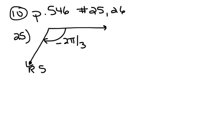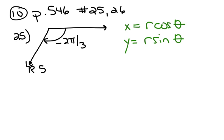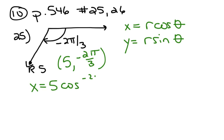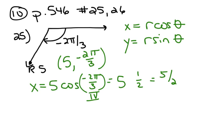In number 10, page 546, numbers 25 and 26, we want to turn polar coordinates back into rectangular coordinates. The formula is x equals r cosine theta, and y equals r sine theta. For number 25, r is 5 and theta is negative 2pi/3. x equals 5 cosine(−2pi/3). Since −2pi/3 is in quadrant 4 — wait, actually quadrant 3 — but cosine gives positive 1/2. So the x coordinate is 5/2.